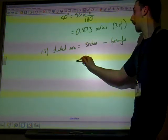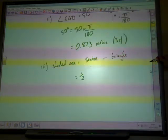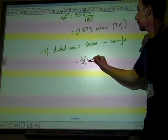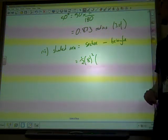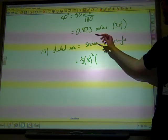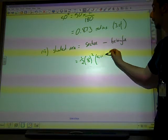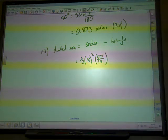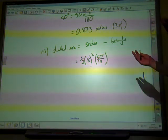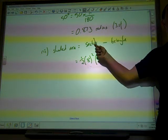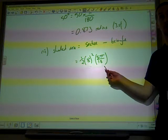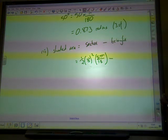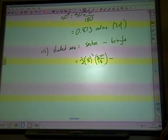And the sector is a half R squared theta. A half, have we got that value? Yep, the radius there is 8. So it's a half times 8 squared times theta, which is this angle that was up here, which was 0.873, or 5 pi over 18. Could you use the degrees or the radians? You could use the degrees. Well, hang on. When you find the area of the sector, you have to use the radians. Half R squared theta, you have to use the radians. The triangle, as long as your calculator is in the right mode, you could use either one.